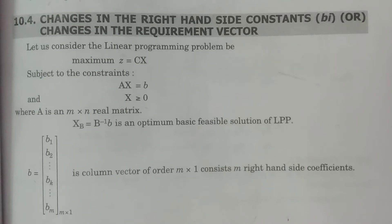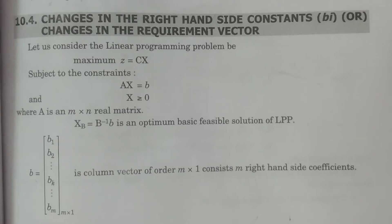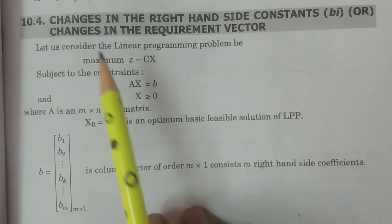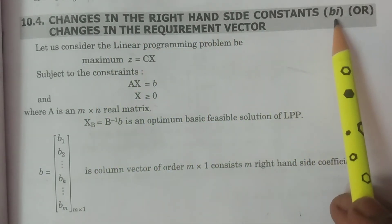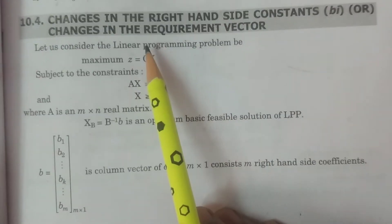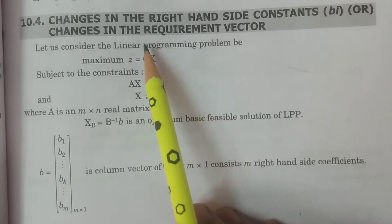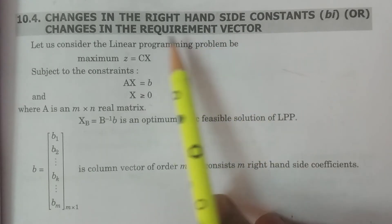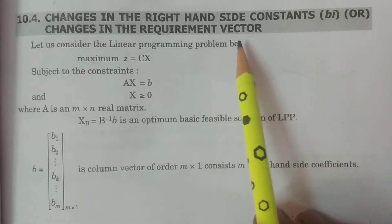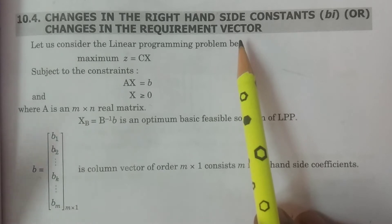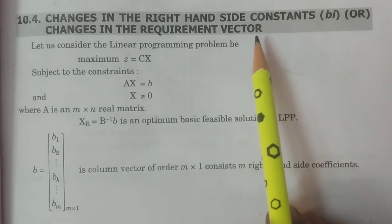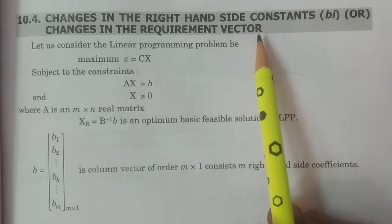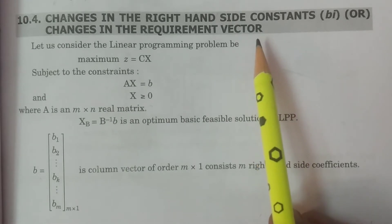Welcome to BSc Statistics students. In this class, I explain post-optimal analysis, that is sensitivity analysis — specifically the changes in the right-hand side constants, that is Bi, also called B1, B2, ..., Bm, which are in the requirement vector. If any changes occur in the right-hand side constants, that is in the requirement vector, what would be the optimum solution and how the optimum solution is going to be maintained for these changes? This is what the discussion.